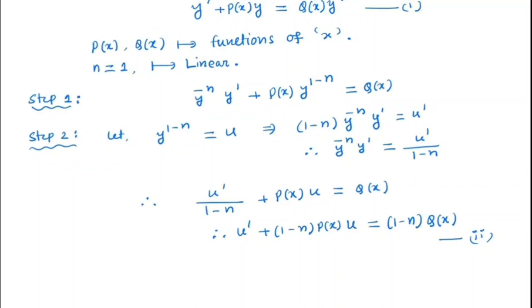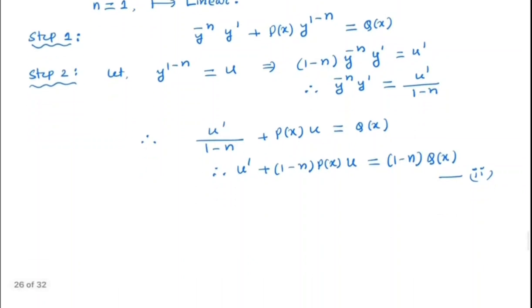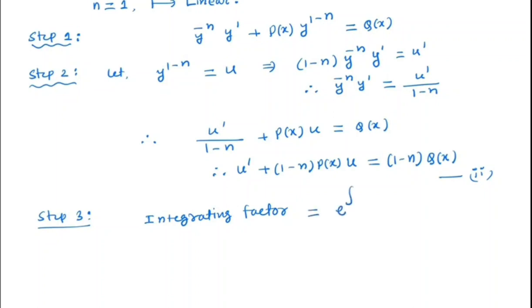In my previous video I have already discussed in detail how to solve a first order linear ODE using an integrating factor — I will give the link in the description box. Step 3: The integrating factor will be e to the power of the integral of (1−n) times p(x) dx, since that is the coefficient of u in the standard form. This is denoted i(x).